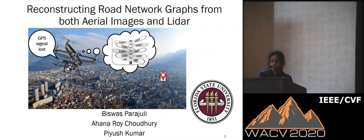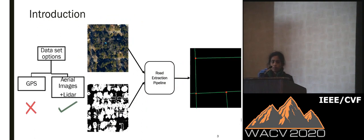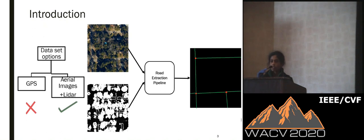Hi, I'm Ahana, a PhD student at Florida State University. Today I'll be presenting our work on reconstructing road network graphs from both aerial images and LiDAR. Road networks are important for transportation, urban planning, mapping, and self-driving cars. We could have used GPS traces, but they raise concerns about personal data use and are not uniform in all places — in rural areas, accuracy would be affected. So we use a dataset consisting of aerial images and LiDAR, which can be obtained cheaply and do not suffer from those drawbacks. We want to develop a road extraction pipeline that gives us a road network consisting of nodes and edges.